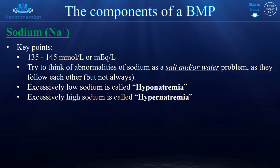Let's move on to the individual components of a BMP, starting with sodium. Normal values: 135 to 145 millimoles per liter or milliequivalents per liter, depending on what country you're in. Remember 3, 5, and 4, 5 — as in 135 to 145 — because 3.5 and 4.5 are going to be common numbers with potassium as well, so that will help you remember normal values.